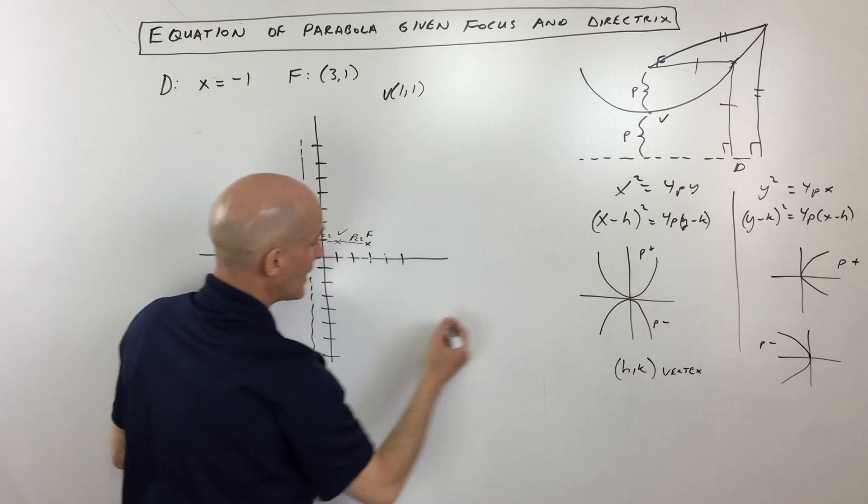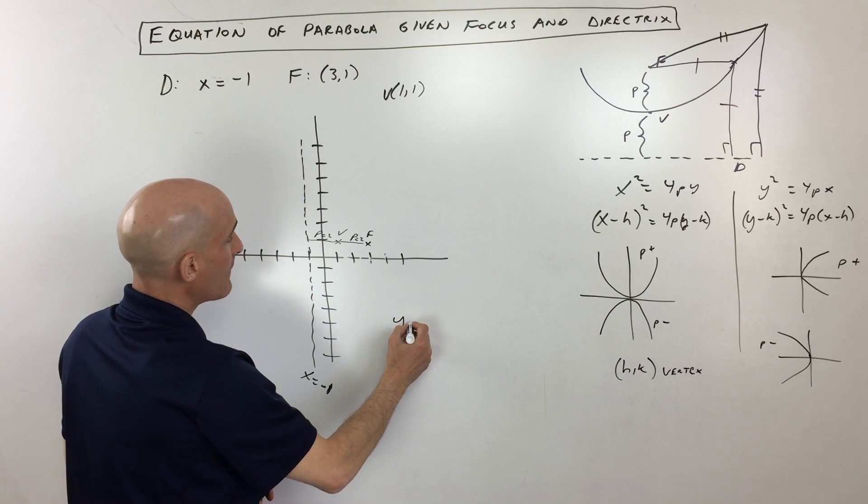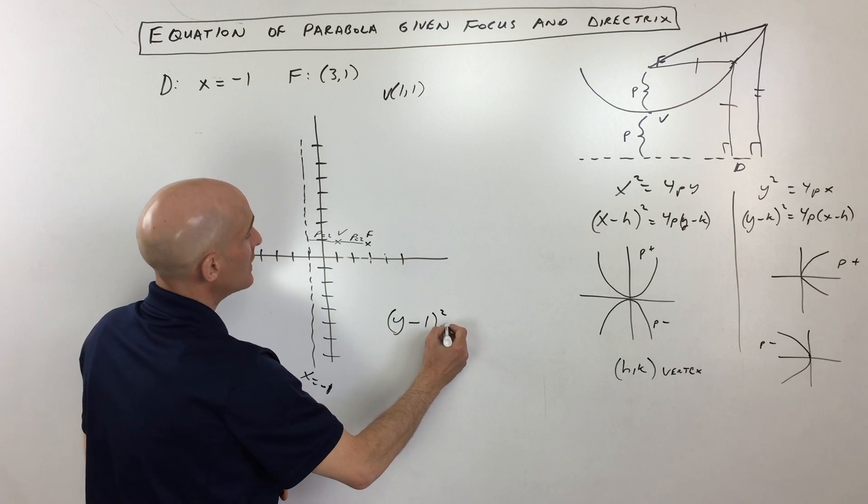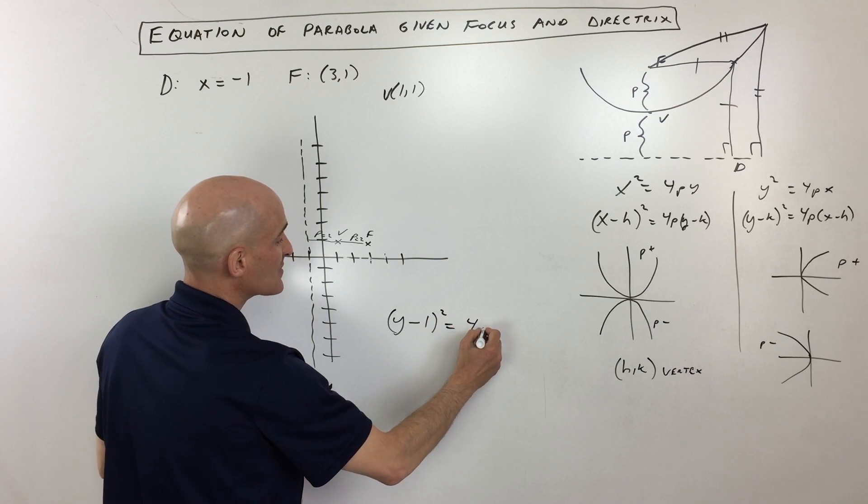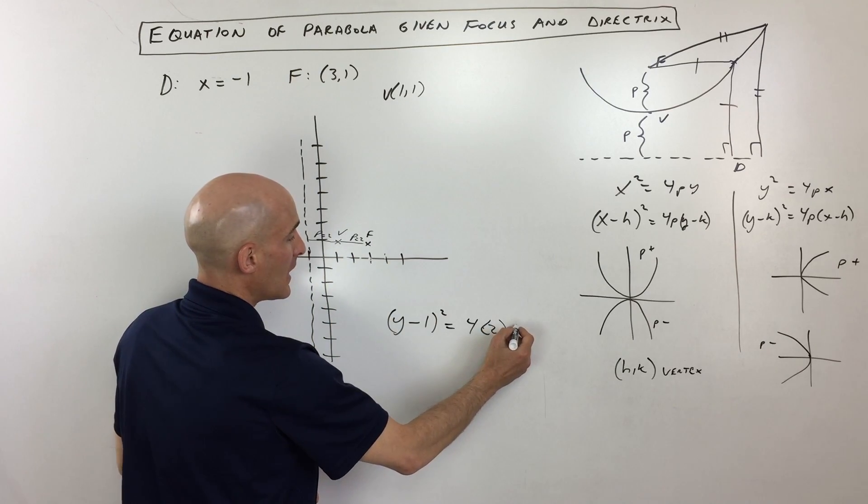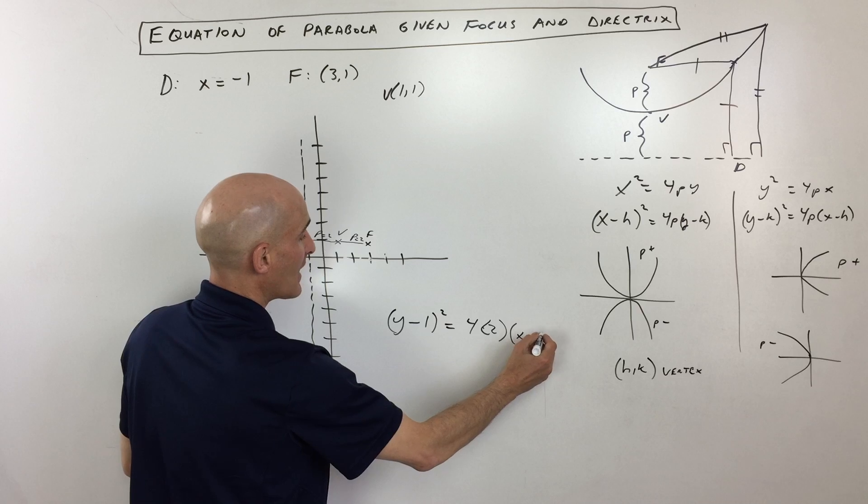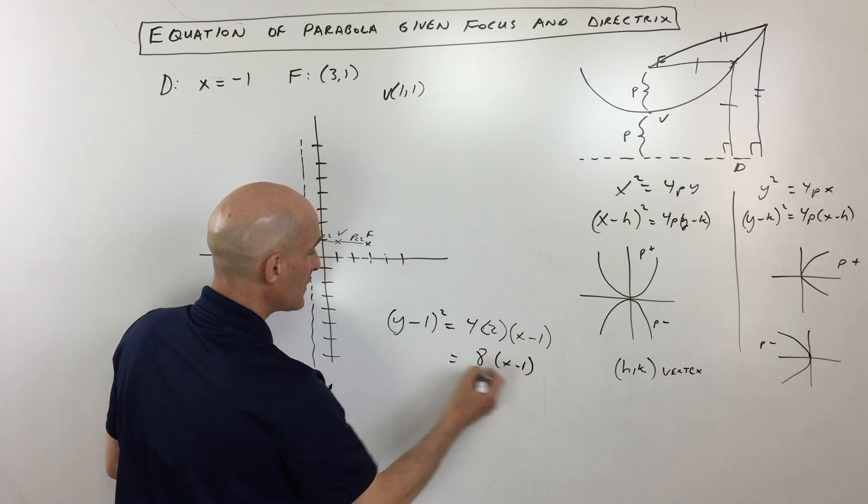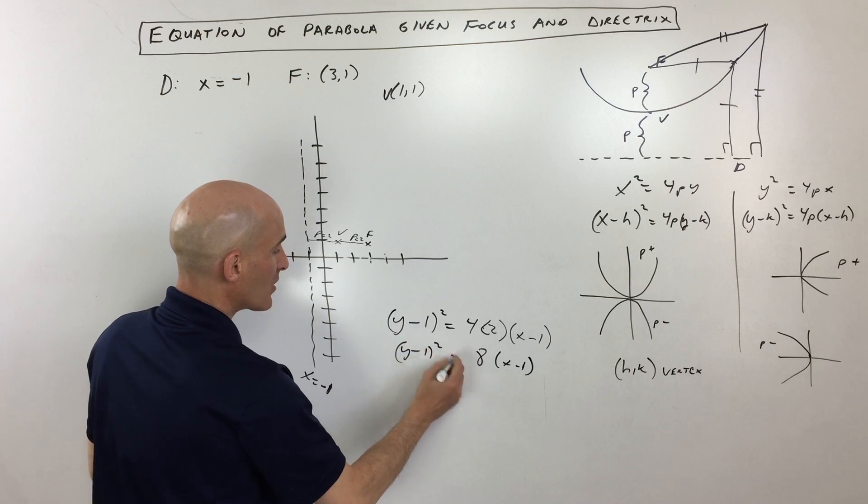Okay, so this is going to be y minus one squared equals four times p. P is two here, so four times two, and then x minus one. So if we simplify this, this is eight times x minus one, and this is y minus one squared.